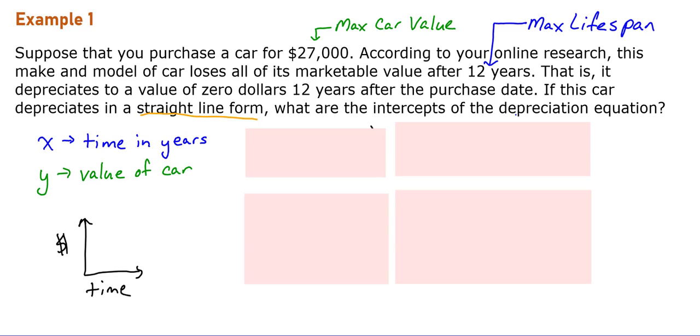Our line is going to lose value, so it is going down. This is when our car has its max value, and this point, our intercept, is when it has a value of $0 after the 12-year lifespan.